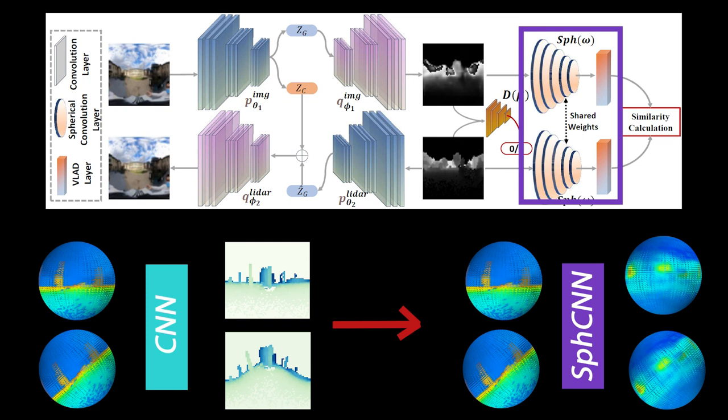Instead of using traditional convolution networks, we are introducing a spherical convolution to extract all the symmetric features, which can help our system deal with viewpoint differences when revisiting the same place.